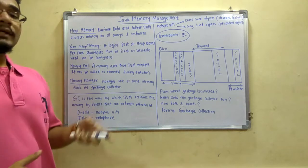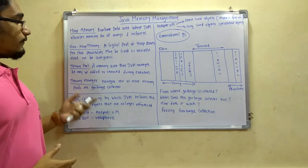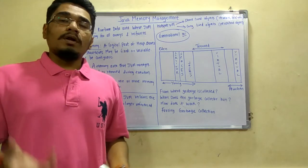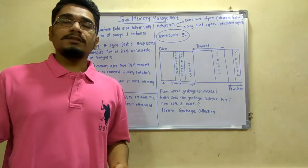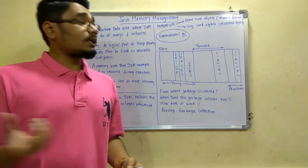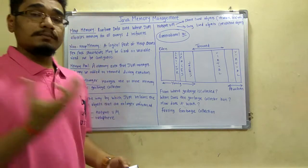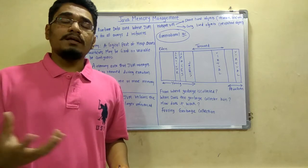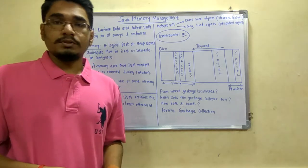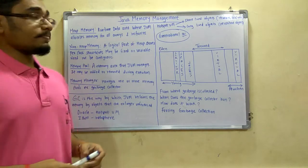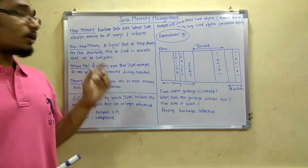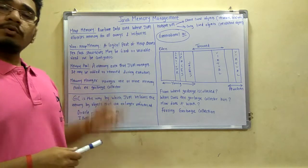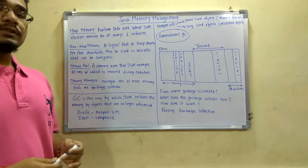Next, what is non-heap memory? It is a logical part of the heap and stores per-class structures. It may be fixed or variable and it may not be contiguous. Non-heap memory may be a method area, as discussed in the JVM internals. It stores per-class structures — meaning the code data, the method data, the class variables and other field data which are required for program execution. Remember: heap memory and non-heap memory need not be contiguous.